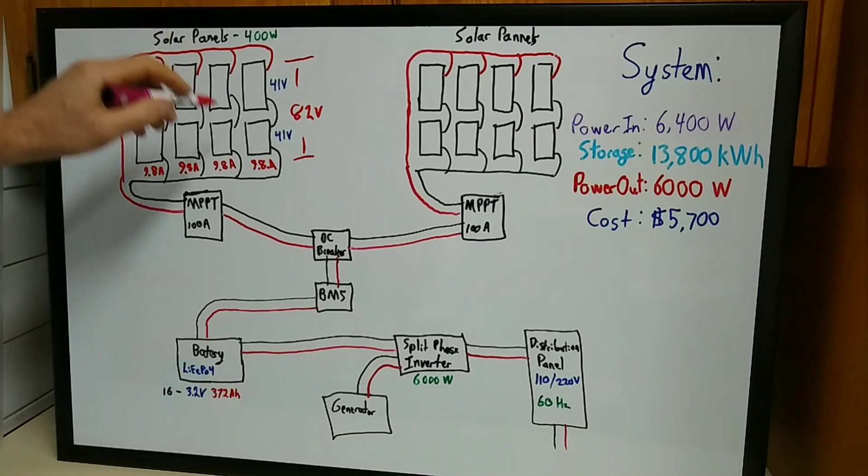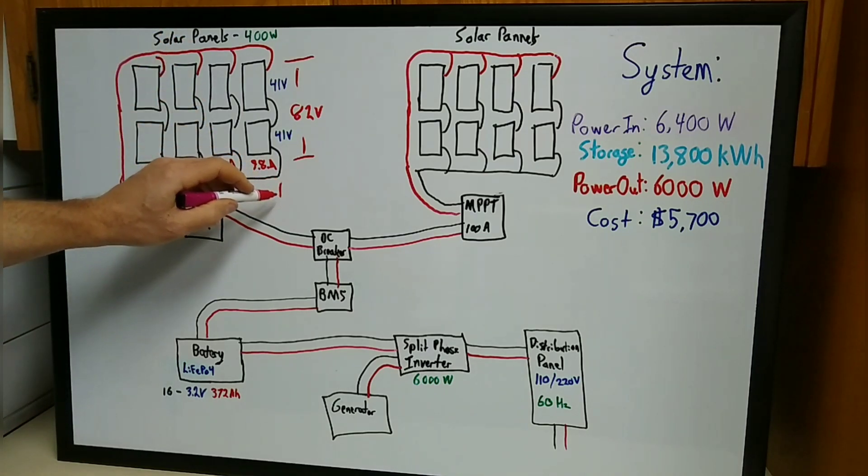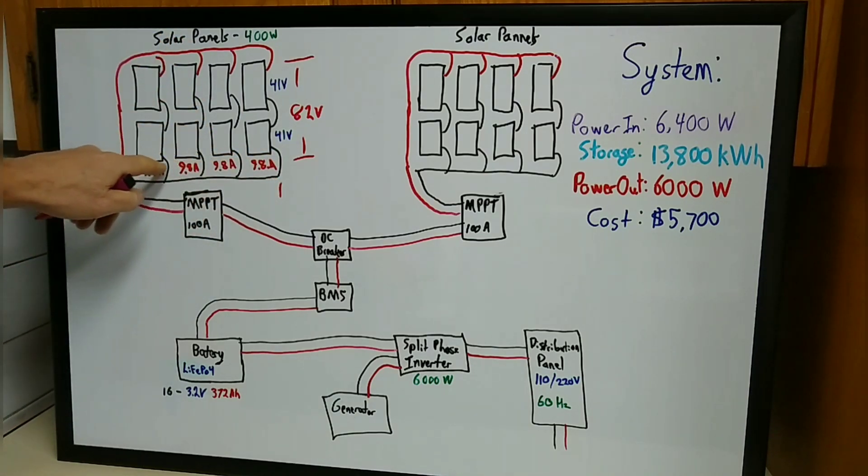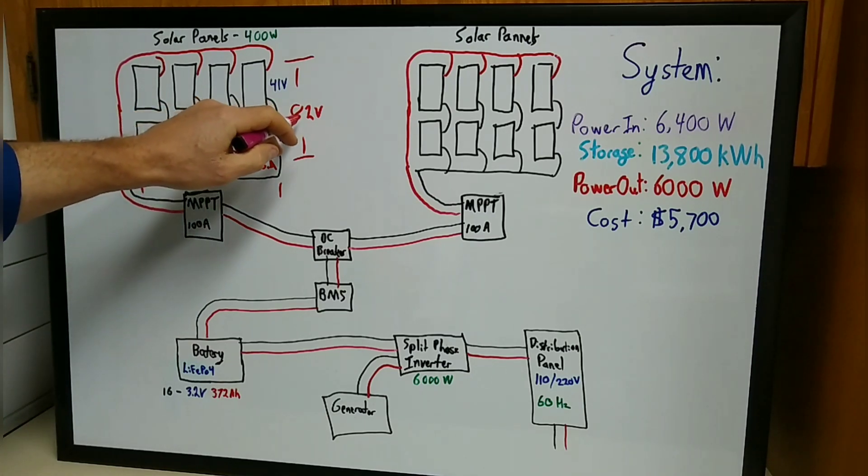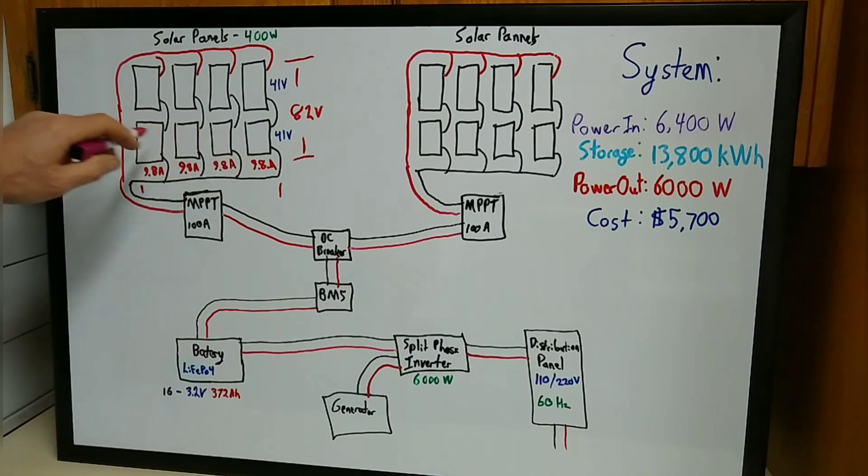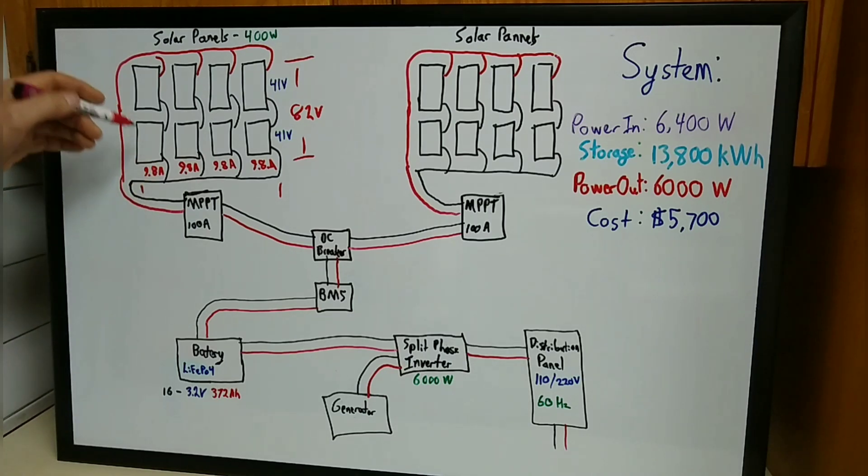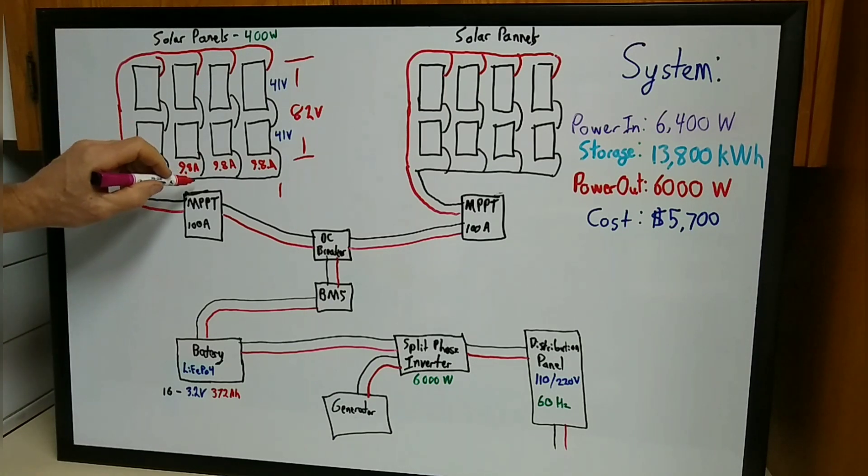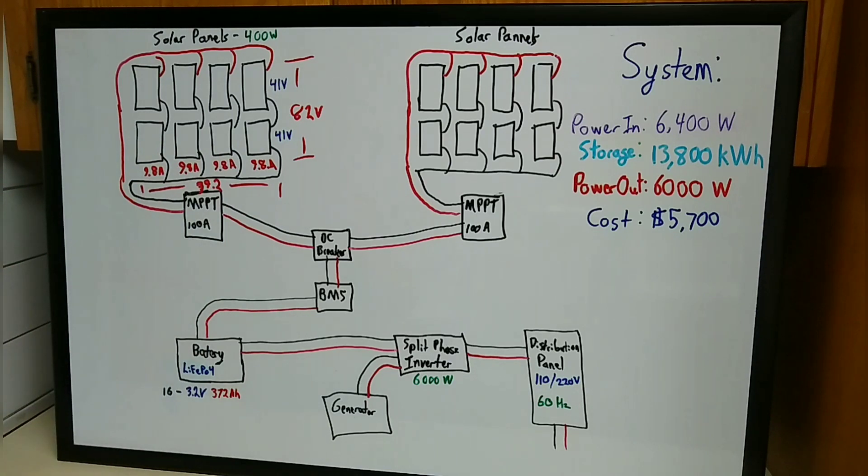The same works for when we go into parallel—we're adding them up like this. When we go into parallel, the voltage stays the same but the amps add up. We have four in parallel, so we'll add up 9.8, which is the amperage that each one puts out, and multiply that times four to get 39.2. That's how you figure out how you need to configure your system.